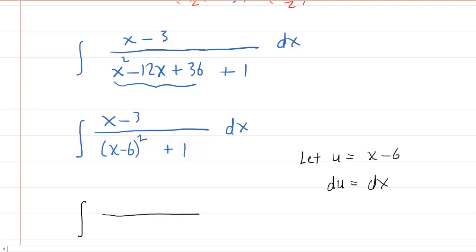And then we can come back here, and we can start to make a little bit of substitution here. The x minus six in the denominator, that's going to be u. So you're actually going to have u squared plus one.